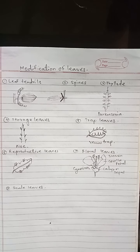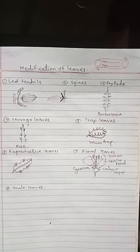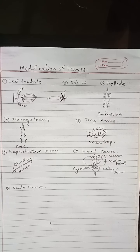The second modification is leaf spines. The pointed structure formed by the modification of entire leaf or part of a leaf is called a spine. In Opuntia, leaves of axillary branches are modified into spines. In Berberis, the entire leaf gets modified into three spines. In Citrus, the first leaf of the axillary branch gets modified into a spine. In Argemone, the leaf margin is modified into spines.